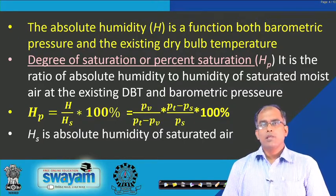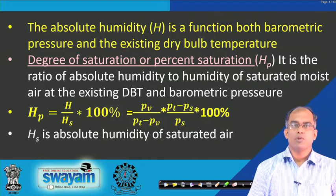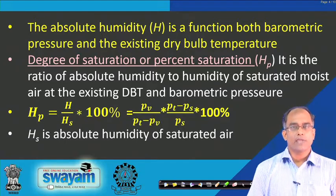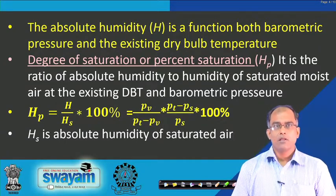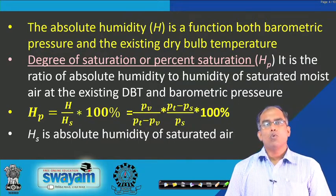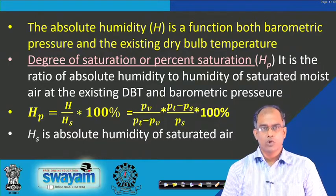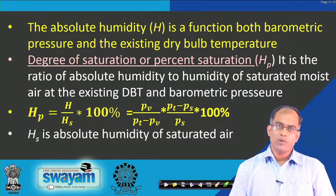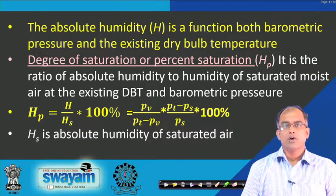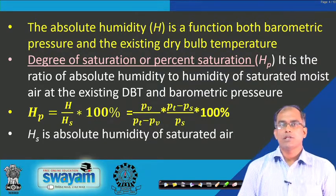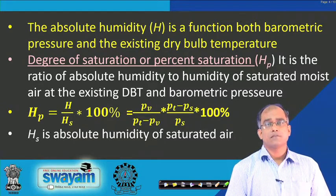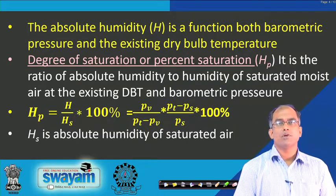In summary, there are four ways to represent humidity: absolute humidity H (kg water vapour/kg dry air), molar humidity H_m (moles water vapour/moles dry air), relative humidity H_R, and percentage humidity H_p. H_s in the expression for H_p is the absolute humidity of saturated air.